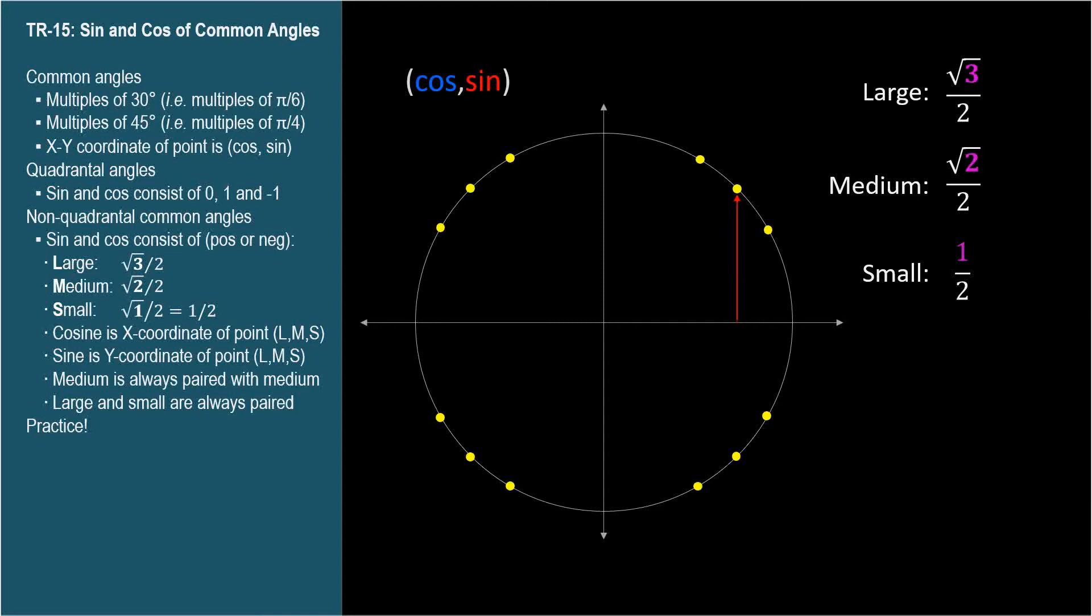Try this one. What's the sine of forty-five degrees? Positive medium, square root of two over two. Remember, the cosine is the x-coordinate, and the sine is the y-coordinate of the angle's point on a unit circle.